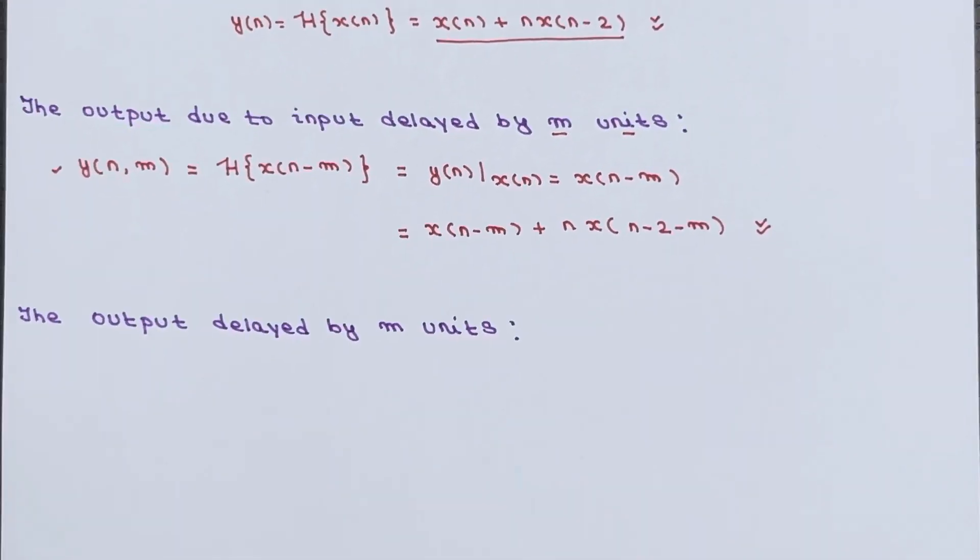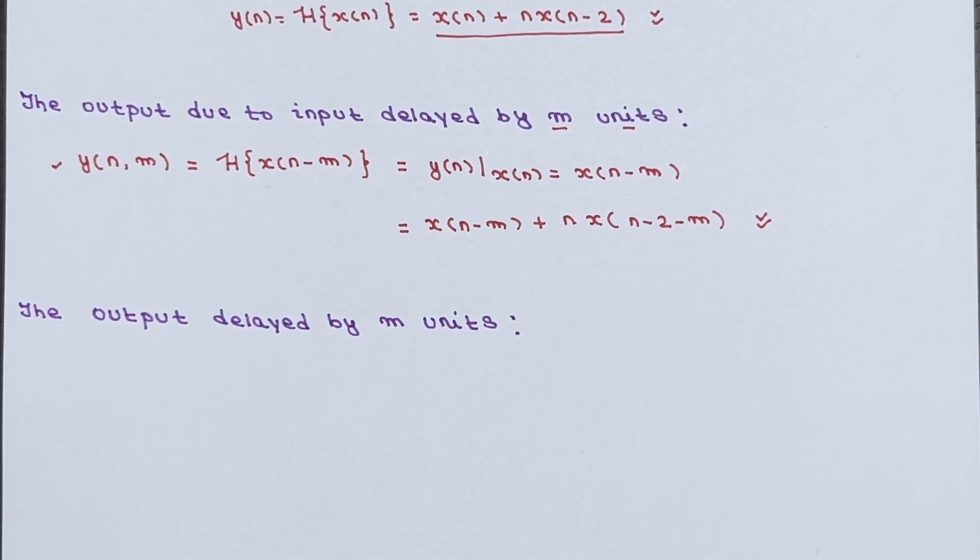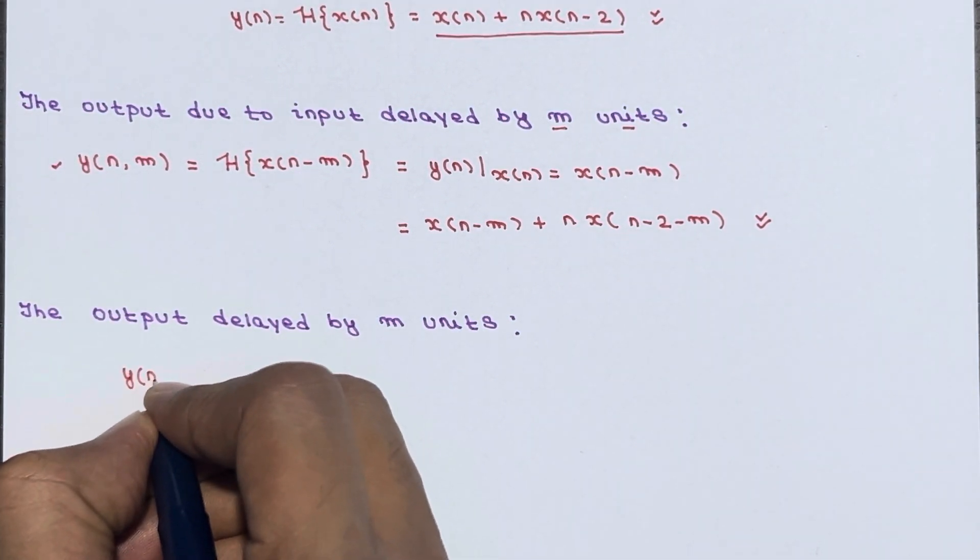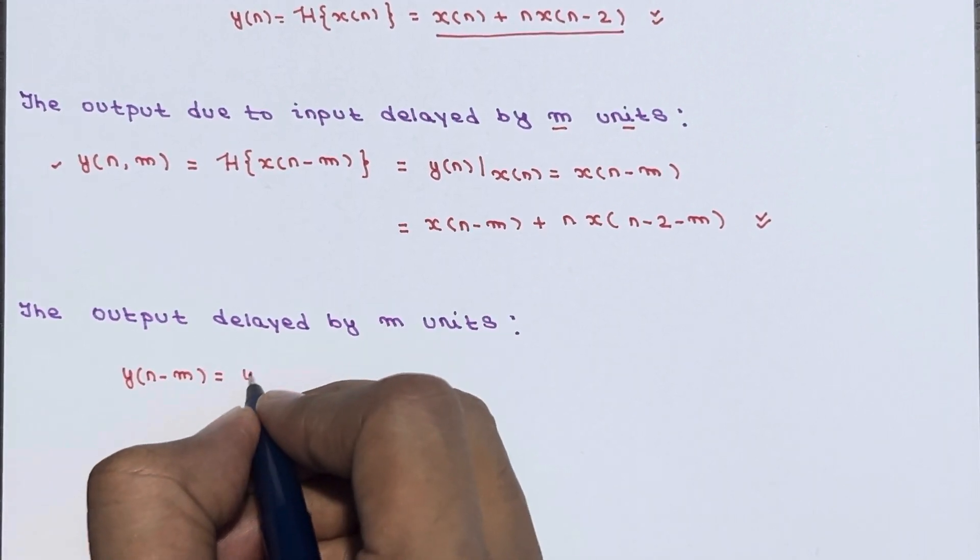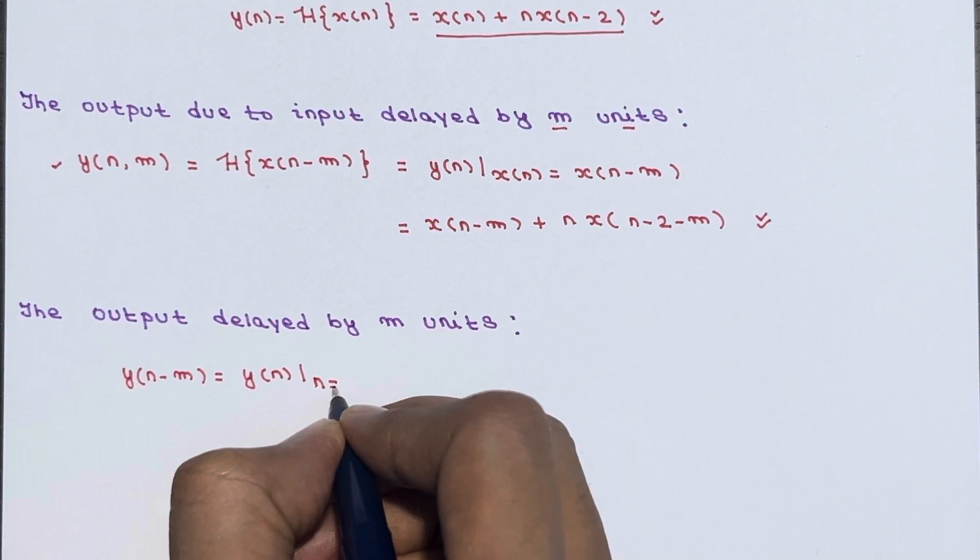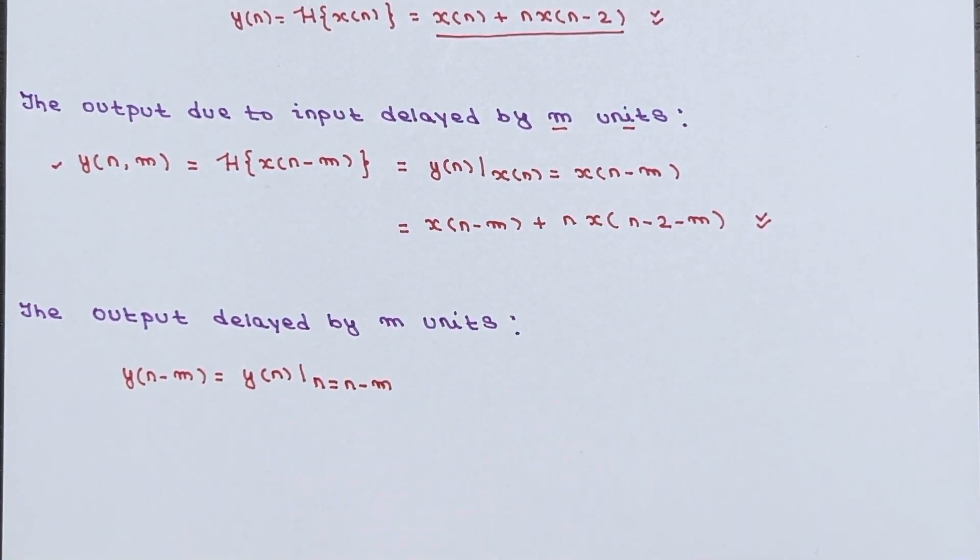Now, let's move further and calculate the output delayed by m units. So y(n-m) you have to calculate, which is nothing but y(n) when n is equal to n-m. So wherever n is present, just replace with n-m.